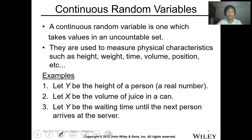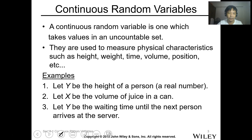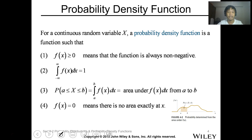For example of continuous random variables: let X be the height of a person — there are a lot of real numbers from the height. Let X be the volume of juice in a can. Let Y be the waiting time until the next person arrives at the server. For these values, even if you say the range is from 5 feet to 6 feet, there are still infinite values between 5 and 6 feet — same with volume and same with time.